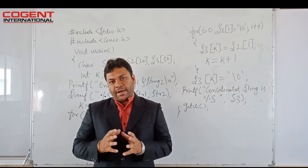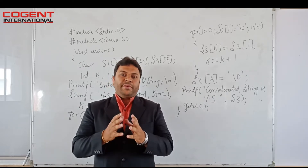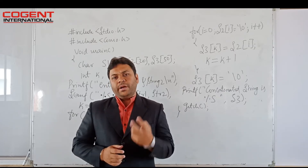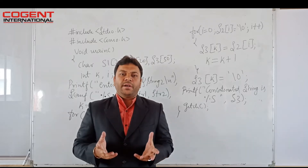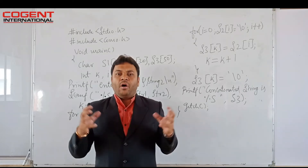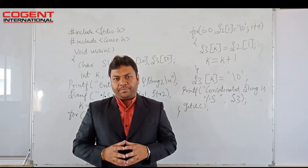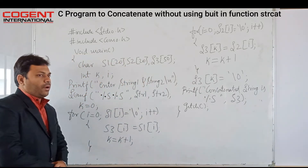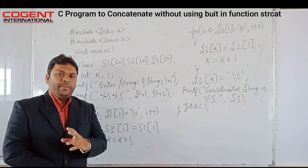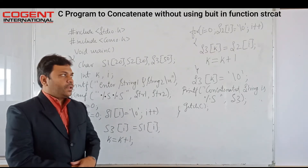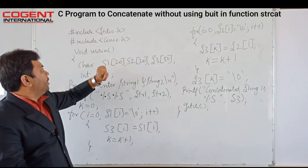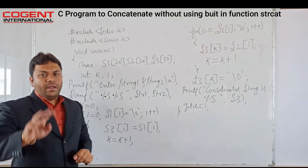Now let us understand string concatenation without using the built-in strcat function. In the previous example we saw how to concatenate using the built-in function; now we will see how to join two strings without it. Here I have written a C program that includes two header files — standard input/output and console input/output — then the main function.